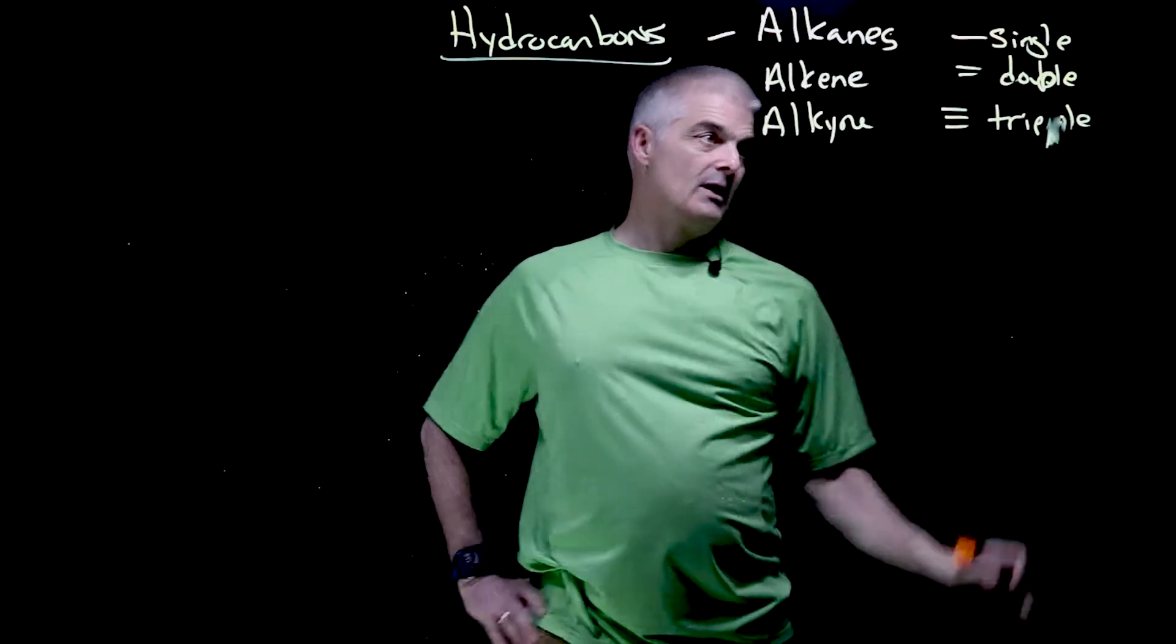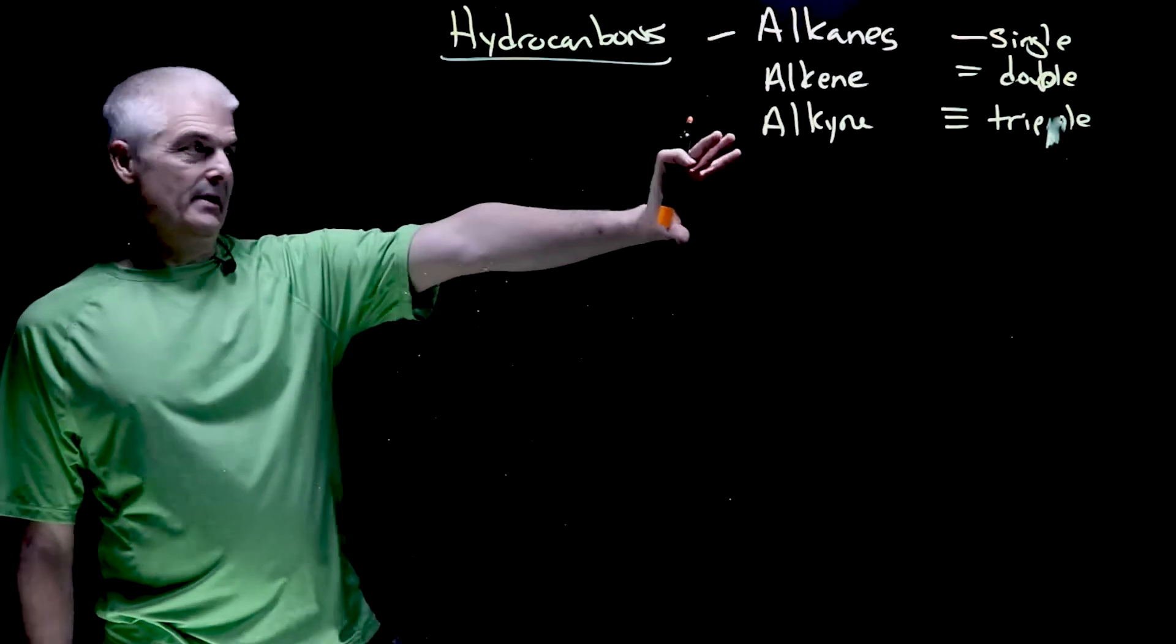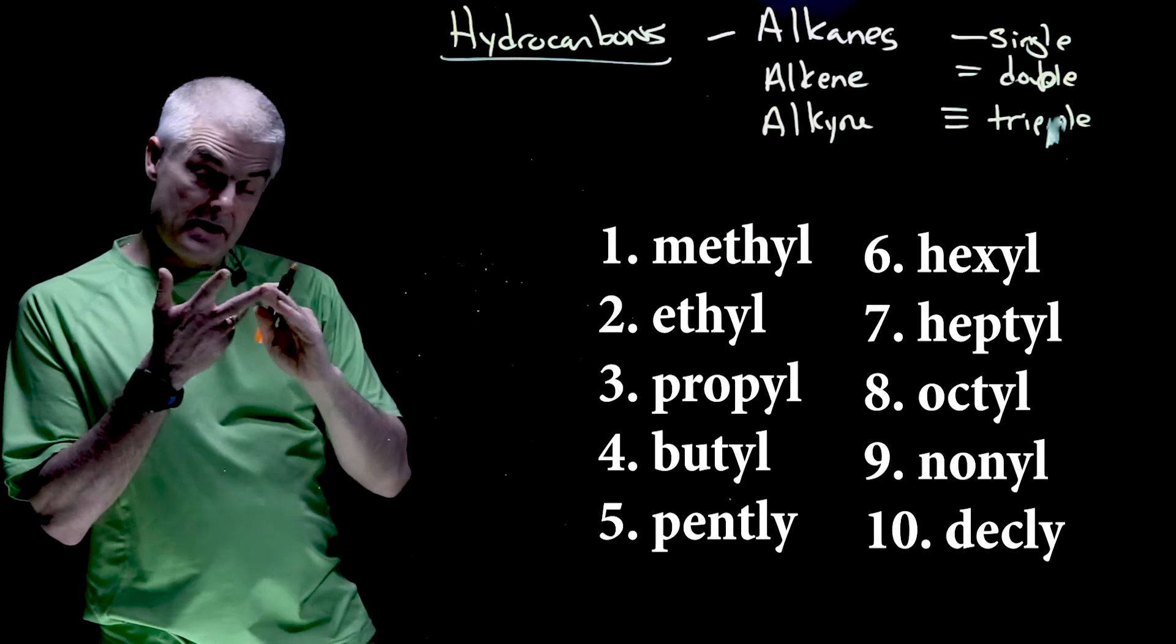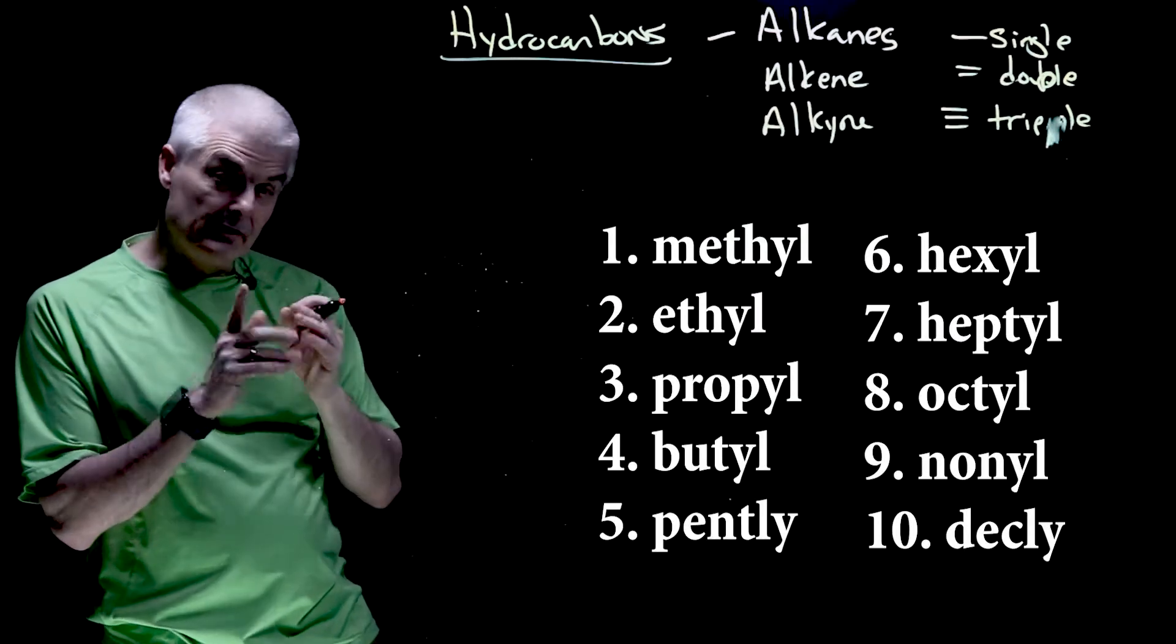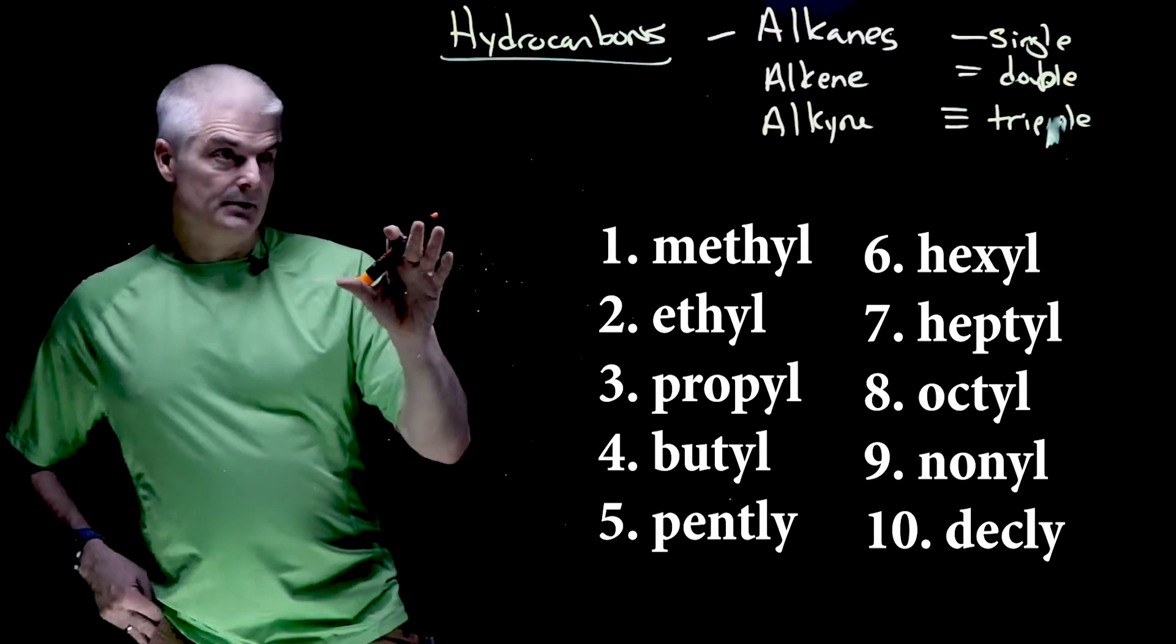I think there's only one P in triple. Okay, triple, whatever. And when we're trying to name them, what we do is we just use the numbers. Methyl, ethyl, propyl, butyl, pentyl, hexyl, heptyl, octyl, and nonyl.